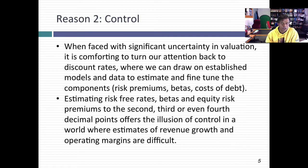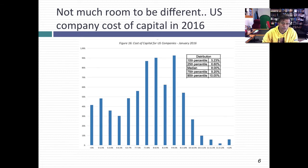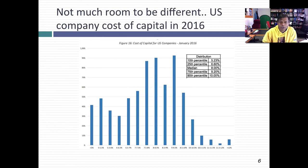Let me back up that statement — that we spend far too much time on discount rates — with two graphs. At the start of every year, I take every publicly traded company in the U.S. and globally and compute the cost of capital for each company, to get a sense of what's high, low, typical, and what the distribution looks like. I'm going to show you what those numbers look like at the start of 2016, across about 7,400 publicly traded U.S. companies, using the risk-free rate at that time, a risk premium, and a beta reflecting their business — essentially the traditional CAPM to get cost of equity.